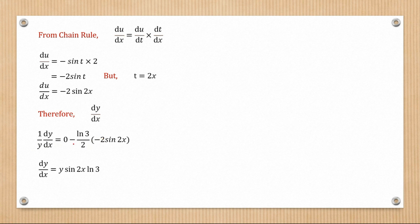We can see this negative multiplies with this negative, so there will be a positive, and this two and this two cancel. But remember y equals 3 to the power of sin²x. Put it back there and we have the final answer for dy/dx.